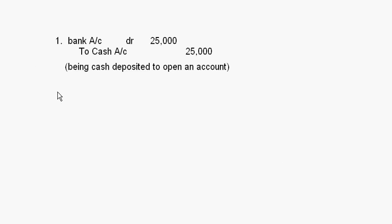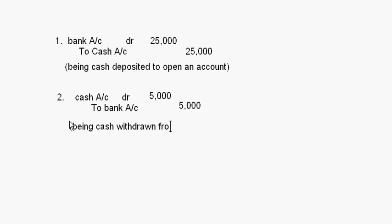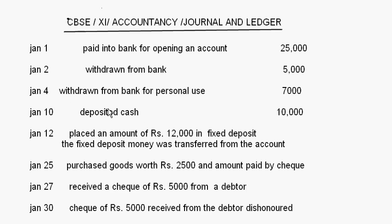Now let's come to the second entry: withdrawn from bank rupees 5,000. When you withdraw from bank you are withdrawing cash from bank, so cash account debit and you are withdrawing from the bank — bank is giving the money, so credit the giver. Remember that bank is a personal account, so the rule of debit the receiver, credit the giver will apply to banks. Cash is a real account. Amount: 5,000 and 5,000, being cash withdrawn from bank.